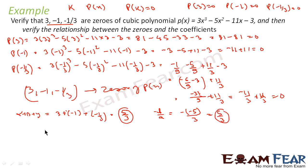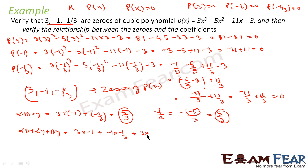Similarly, alpha·beta + alpha·gamma + beta·gamma = 3×(−1) + (−1)×(−1/3) + 3×(−1/3) = −3 + 1/3 − 1 = −4 + 1/3 = −11/3. And c/a = −11/3. So both are equal — the formula for the sum of products of pairs of zeros is also verified.